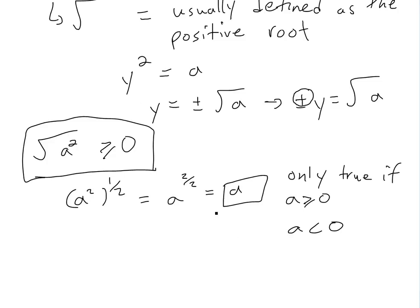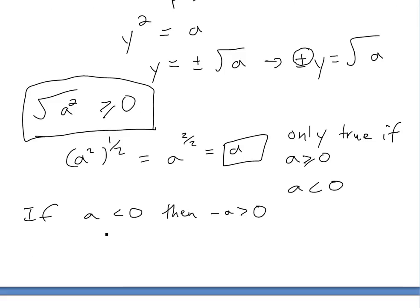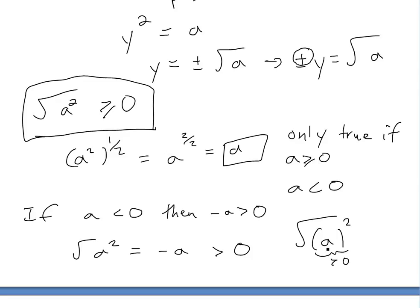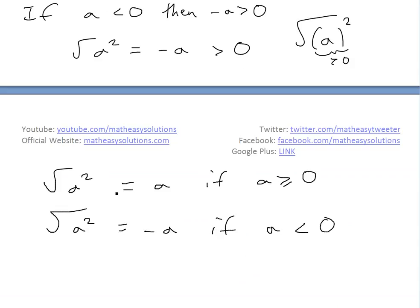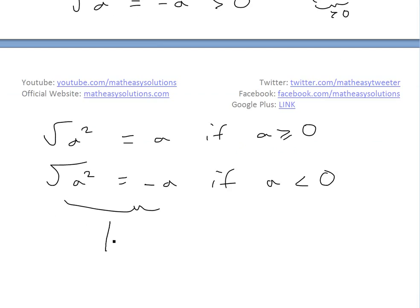If A is less than zero, then negative A is going to be greater than zero, and the result equals negative A, which is greater than zero. You can also see this directly: if A is negative and you square it, whatever you square becomes positive, so the inside is greater than zero, and the square root of that is still greater than zero. Thus it always gives you the positive value, and written out: square root of A squared equals A if A ≥ 0, and equals negative A if A < 0 — which is exactly the same as the absolute value definition.